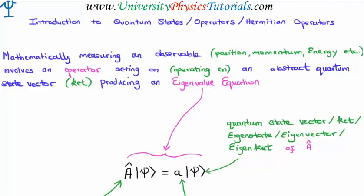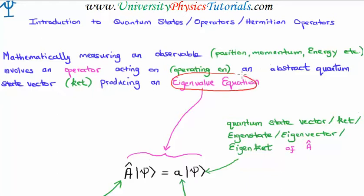These are real quantities and we refer to them as being observables or observable quantities. Now in order for you to be able to measure an observable of a quantum state, you need what's known as an operator. An operator acts on, or operates on, a quantum state vector — in other words an operator operates on a ket. And in doing so it's going to produce what's known as an eigenvalue equation. I refer you to a previous video where I discussed eigenvalue equations and I'm not going to get bogged down about them here.